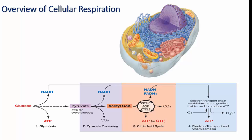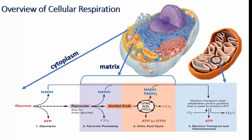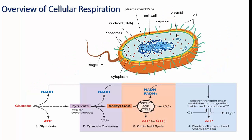In eukaryotic cells, glycolysis occurs in the cytoplasm, while pyruvate processing and the citric acid cycle occur in the matrix of mitochondria. The components of the electron transport chain and chemiosmosis are located in the inner membrane of mitochondria. In prokaryotic cells, glycolysis and the citric acid cycle occur in the cytoplasm, while components of pyruvate processing, the electron transport chain, and chemiosmosis are located in the plasma membrane.